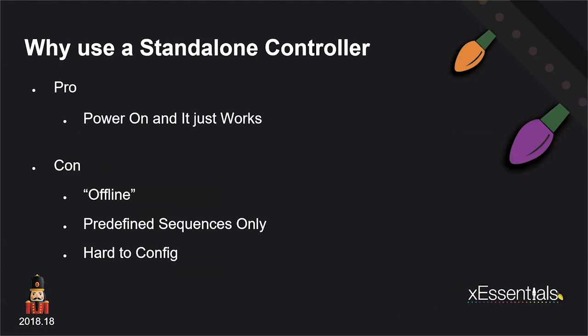Pros and cons of the standalone controller: Pro — you power it on and it just starts working, boots up quickly, and starts pumping out whatever data you had on the USB. Con — it's offline, meaning you can't send E1.31 data to it live. The sequences are predefined and are most likely done in another piece of software — not XLights. You create sequences somewhere else, drop them onto the USB stick, and run it.